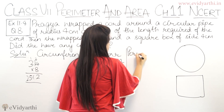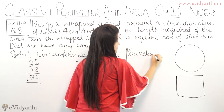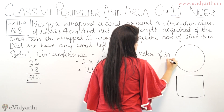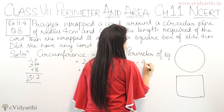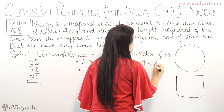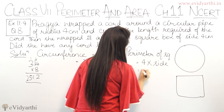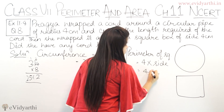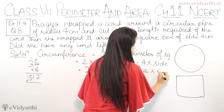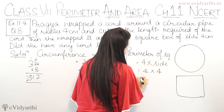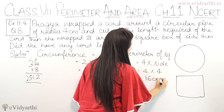Perimeter of the square will be equal to 4 × side. Side given is 4 cm. So 4 × 4 = 16 cm.